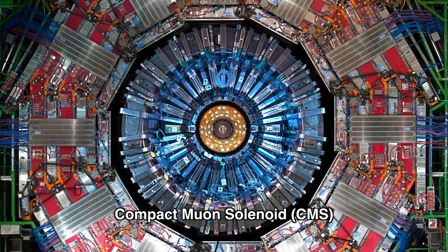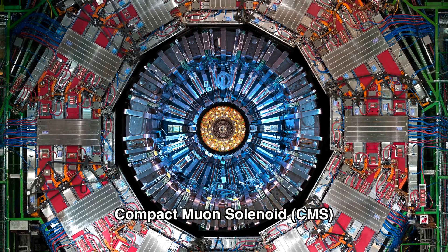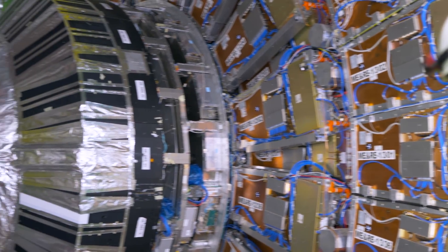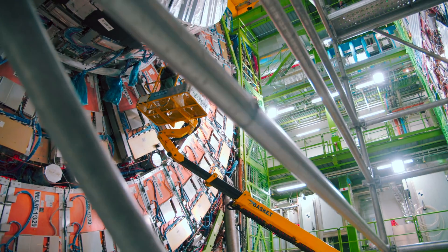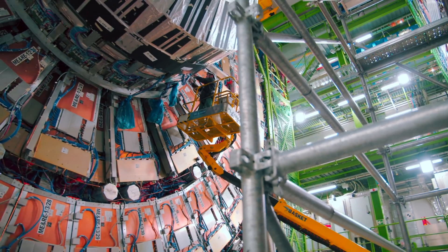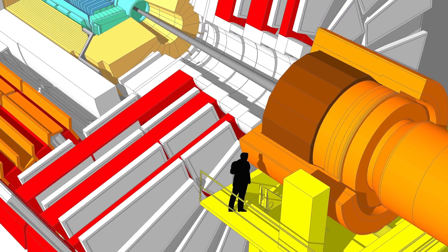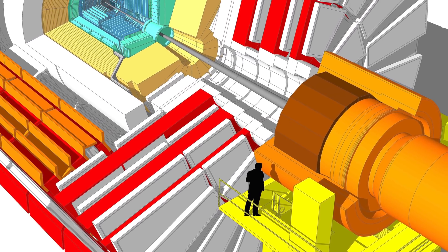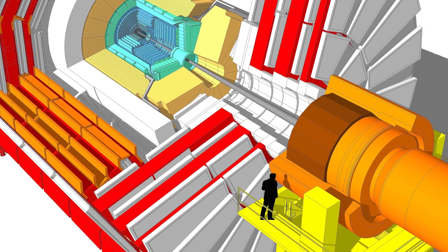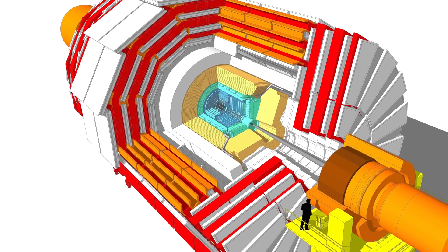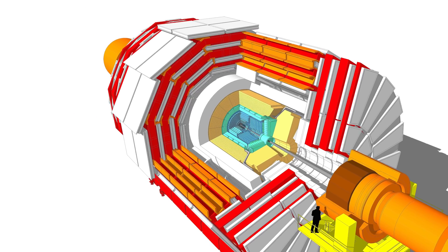Fermilab is a leader on the compact muon solenoid or CMS. CMS is one of the two huge particle detectors on the LHC and we used it to discover the Higgs boson back in 2012. Now CMS is big, really big. It's 5 stories tall and it weighs 14,000 tons. After the upgrades are complete, it will be like a 2 billion pixel camera capable of taking 40 million pictures per second.